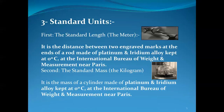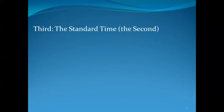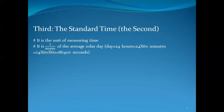The second is the unit of measuring time. One second is equal to one over 86,400 of the average solar day. One day equals 24 hours, and 24 multiplied by 60 multiplied by 60 equals 86,400 seconds.